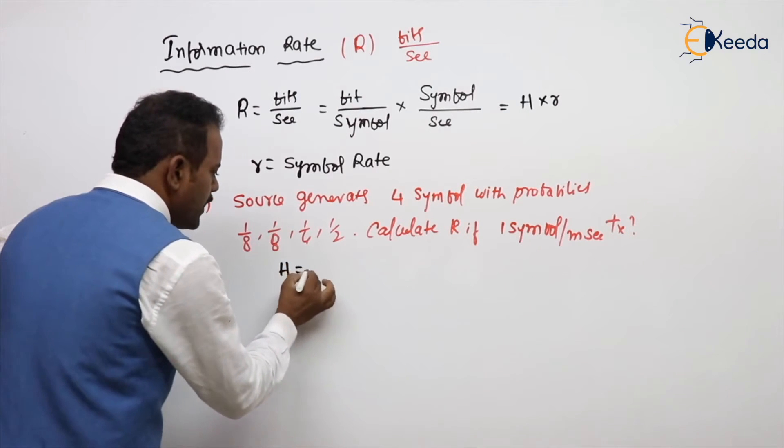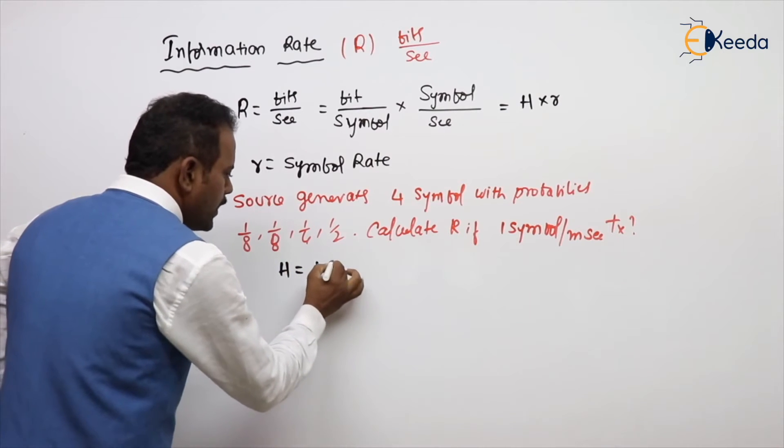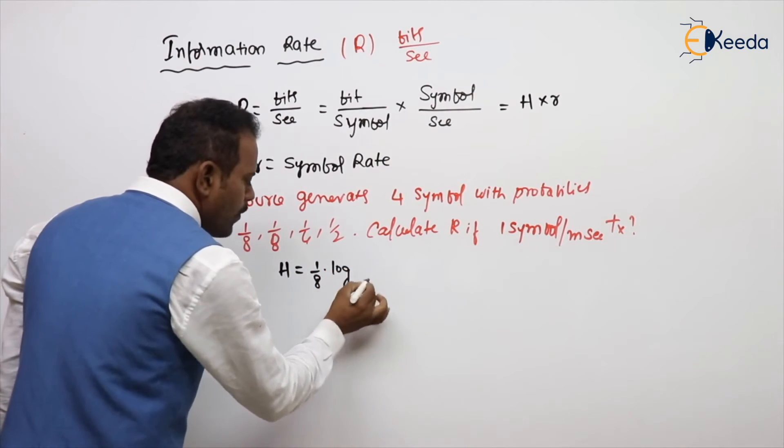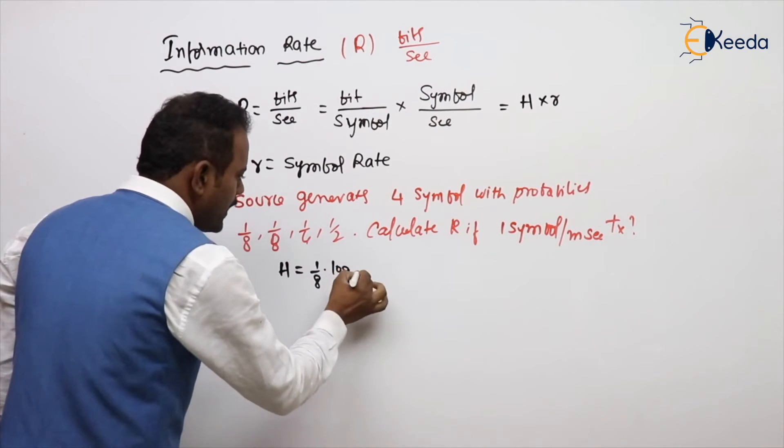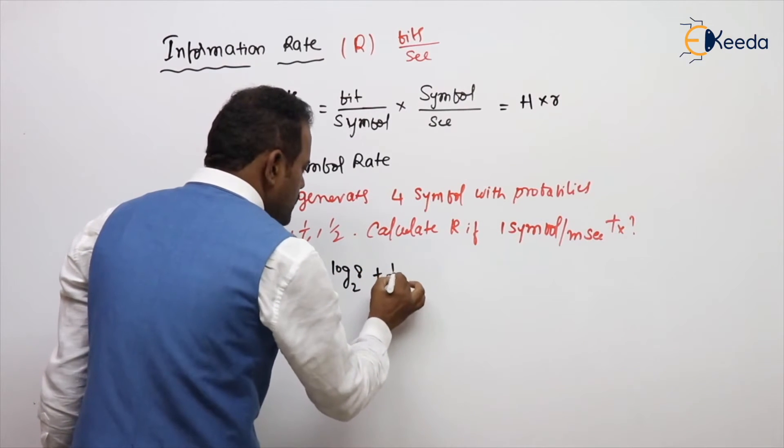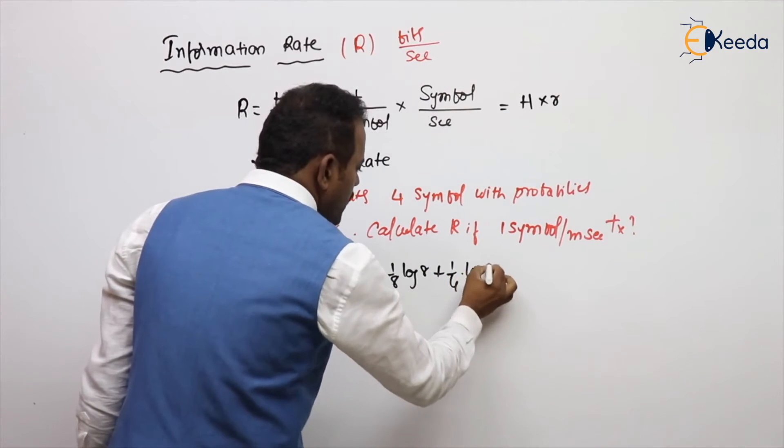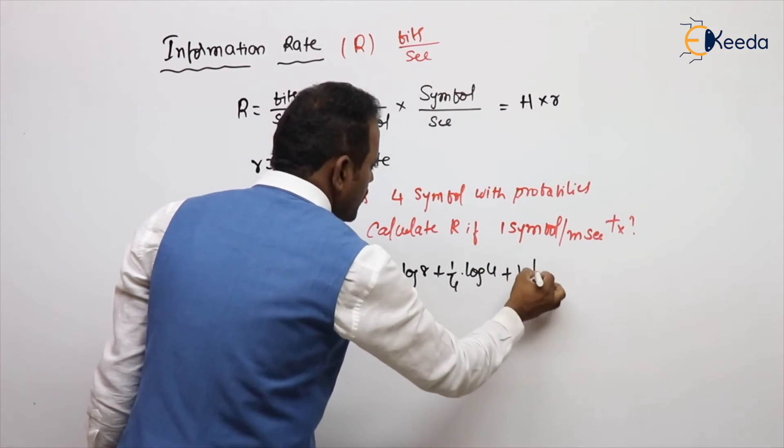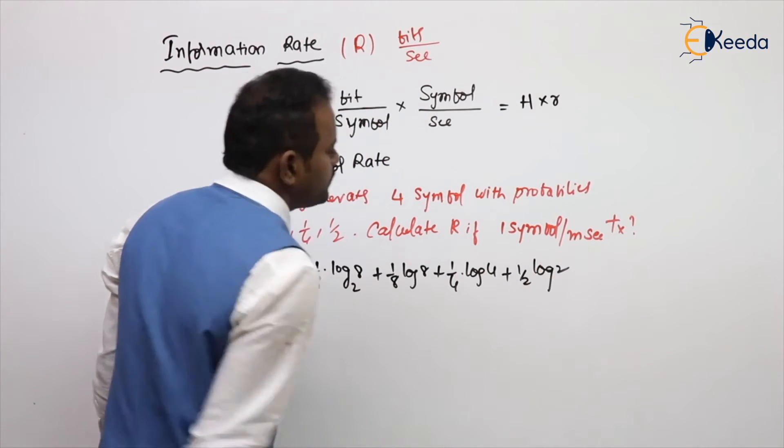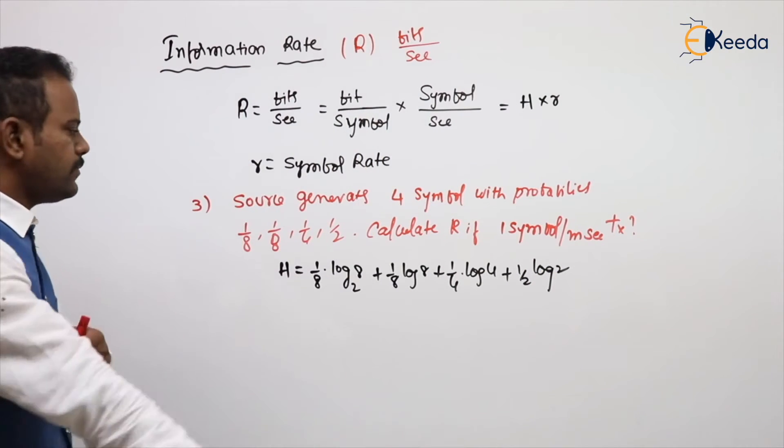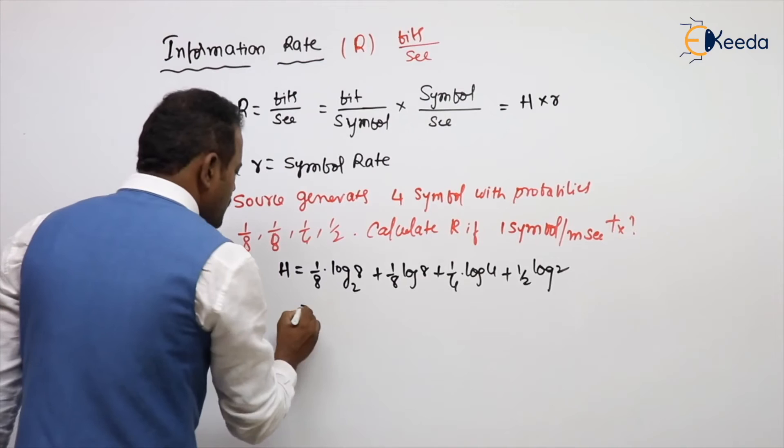What is entropy equal to? Probability into log 1 by probability. 1/8 means log 8 plus 1/8 into log 8 plus 1/4 into log 4 plus 1/2 into log 2.